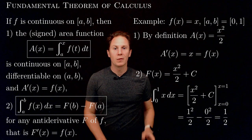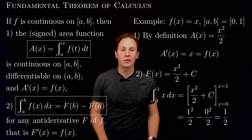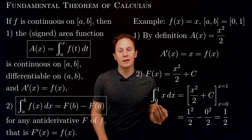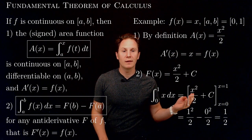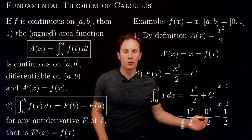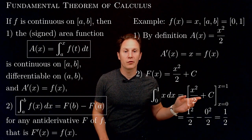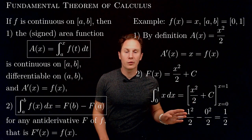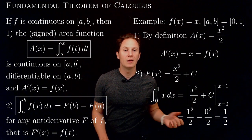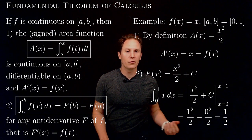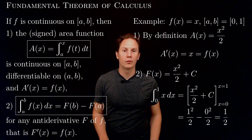So that area is x squared over 2, and its derivative is just x, which is indeed the original function. As for the definite integral, any antiderivative of x is x squared over 2 plus a constant C. If we take the definite integral from 0 to 1 of x dx, we evaluate the antiderivative at the endpoint values and take the difference: x squared over 2 plus C evaluated at 1 gives 1 squared over 2 plus C; at 0 we get 0 squared over 2 plus C. The C cancels, and we are left with 1 squared over 2 minus 0 squared over 2, which is one half, as we know from before.